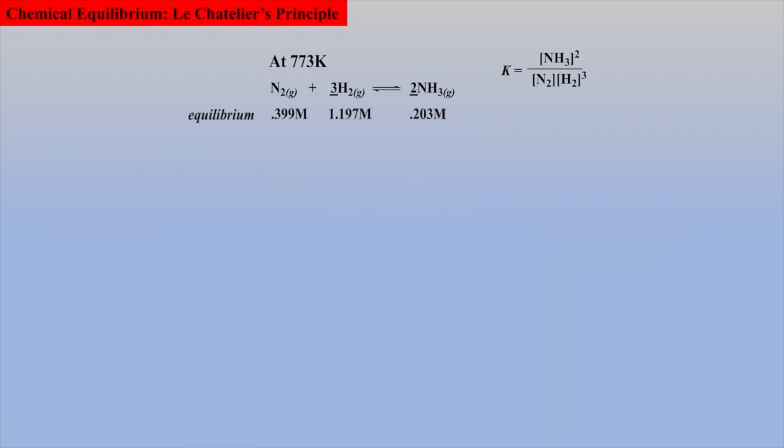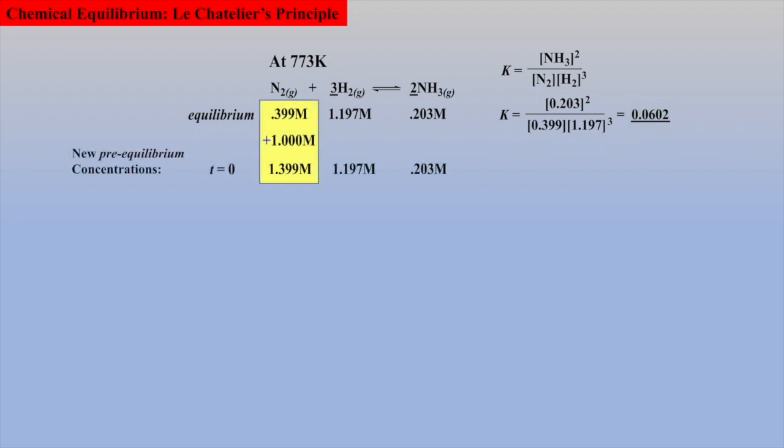At a certain temperature, equilibrium concentrations were measured and recorded in a 1-liter flask, and an equilibrium constant calculated for this temperature. While at equilibrium, an additional 1 mole of nitrogen is added, raising the concentration of nitrogen. As we have already stated, equilibrium will be reestablished when the system shifts away from an increase. Let's mathematically prove this so we don't have to memorize direction of shift.